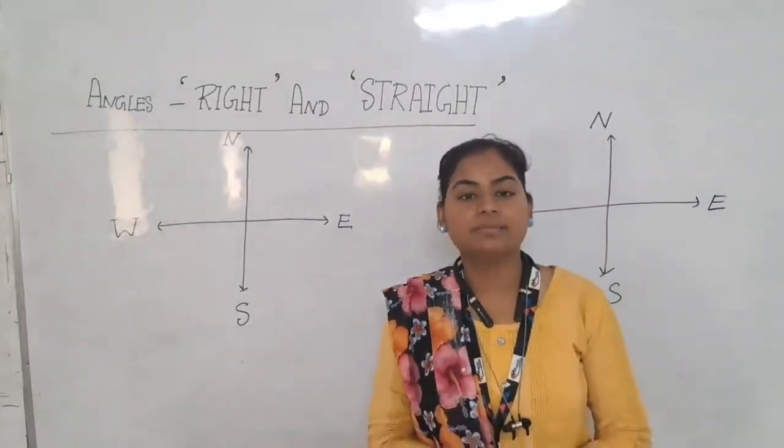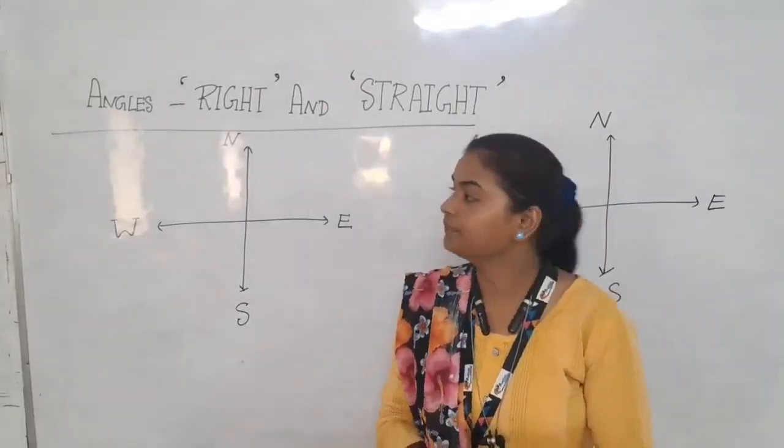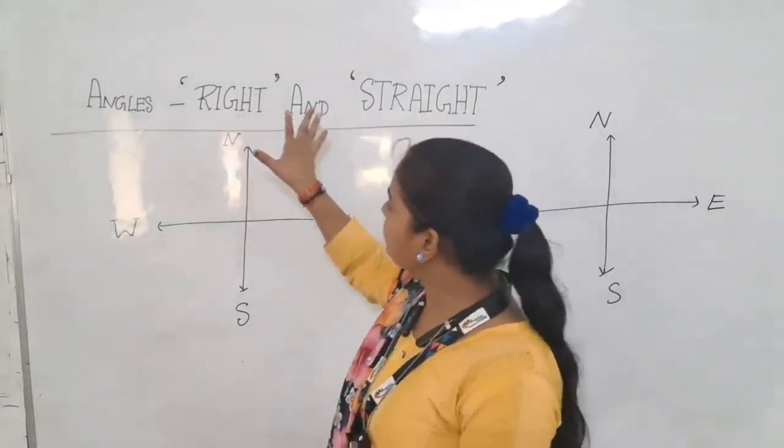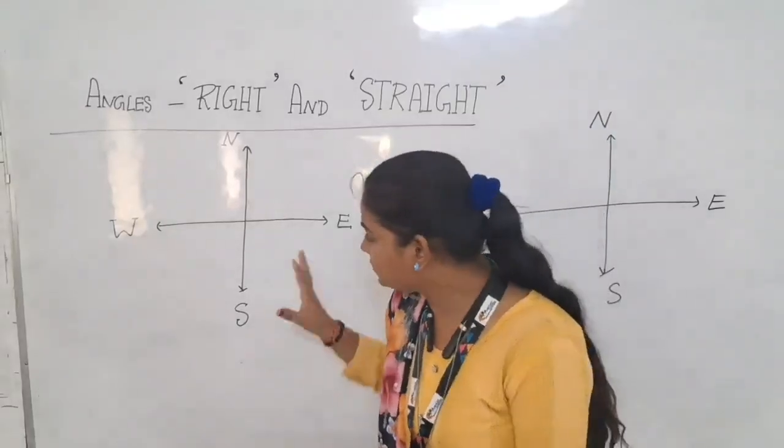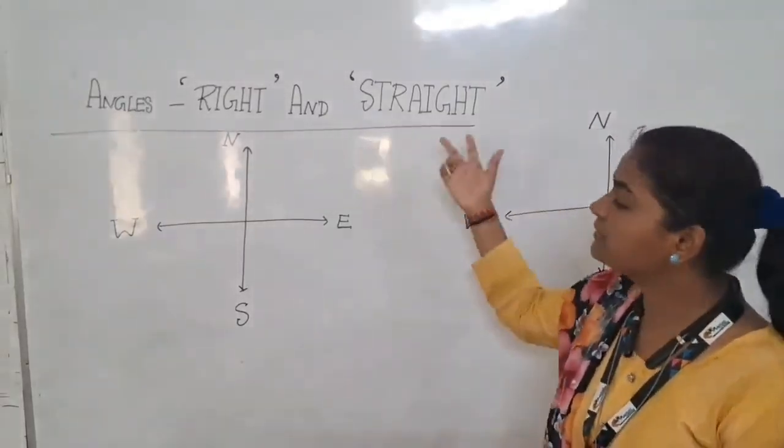In the topic on understanding elementary shapes, we add one topic: angles right and straight. It is based on the compass. According to the compass, we have right and straight angles.